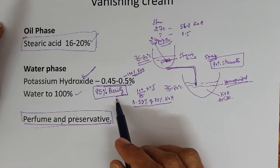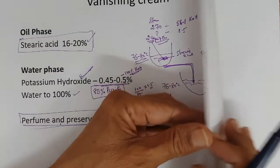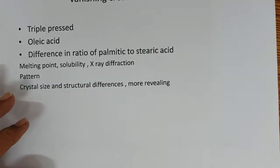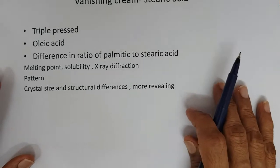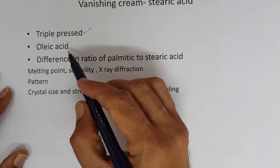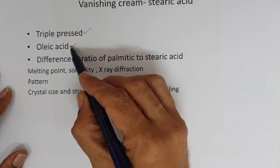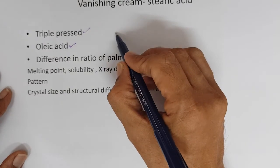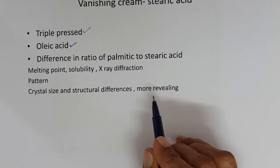You have to calculate 100 by 85 into 0.5, so you will require 0.59% of 85% potassium hydroxide, that is equivalent to 0.5% of 100% potassium hydroxide. You have to calculate because potassium hydroxide maximum purity you get is 85%. Now we will come to stearic acid.